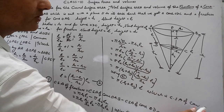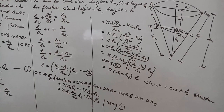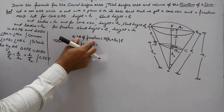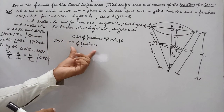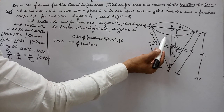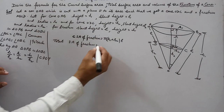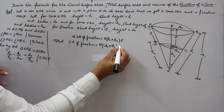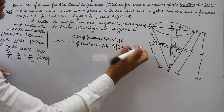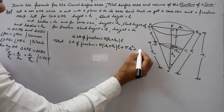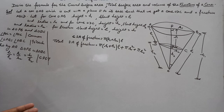We have derived the formula: CSA of frustum = π(r1 + r2)l. For the total surface area, we add the areas of the two circular bases: TSA of frustum = π(r1 + r2)l + πr1² + πr2².